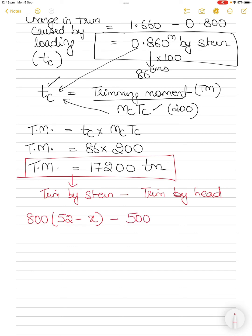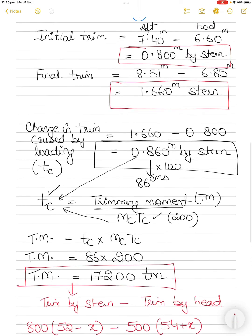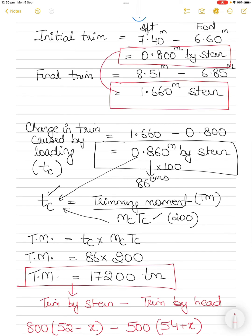Setting up the equation: the trimming moment equals trim by stern minus trim by head. So: 800 × (52 − x) − 500 × (54 + x) = 17,200. The stern term comes first because 800 tons aft caused more trimming by stern, which matches the observed increase in stern trim.